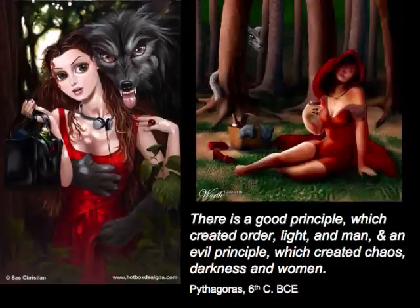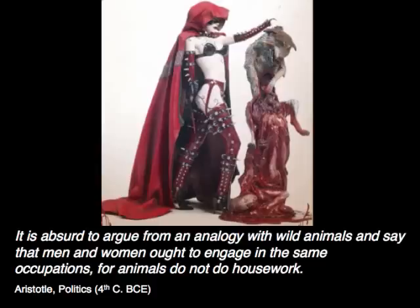Pythagoras, in the 6th century BCE, wrote: 'There is a good principle which created order, light, and man, and an evil principle which created chaos, darkness, and women.' Even Aristotle, it seems, had a problem with women. He said: 'It is absurd to argue from an analogy with wild animals and say that men and women ought to engage in the same occupations, for animals do not do housework.'